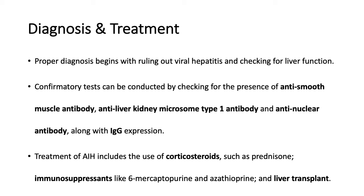Treatment of autoimmune hepatitis generally includes corticosteroids such as prednisone and immunosuppressants like 6-mercaptopurine and azathioprine. In cases where liver function has been severely affected, a liver transplant may also be suggested. None of these provide a permanent solution to autoimmune hepatitis, but they can to a great extent stop or reverse the liver damage. However, there are very good chances of remission of the disease after 3 to 5 years of treatment.